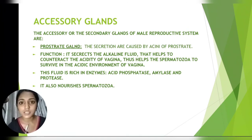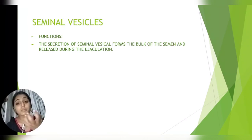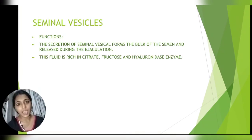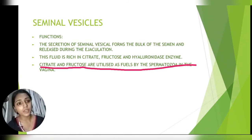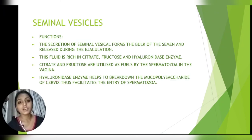It also nourishes the spermatozoa. The second accessory gland is the seminal vesicle. Its secretion forms the bulk of the semen and is released only during ejaculation — not before. This fluid is rich in citrate, fructose, and hyaluronidase enzyme. Citrate and fructose are utilized as fuel by the spermatozoa in the vagina, while the hyaluronidase enzyme helps break down the mucopolysaccharide of the cervix, thus facilitating the entry of the spermatozoa.